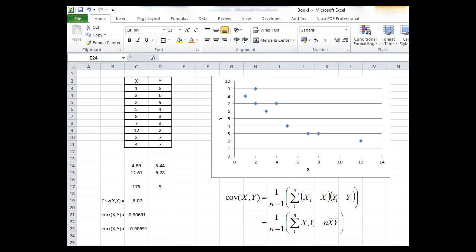In this video we're going to look at calculating covariances and correlations from a sample of data. So our data is contained in the black line box here.